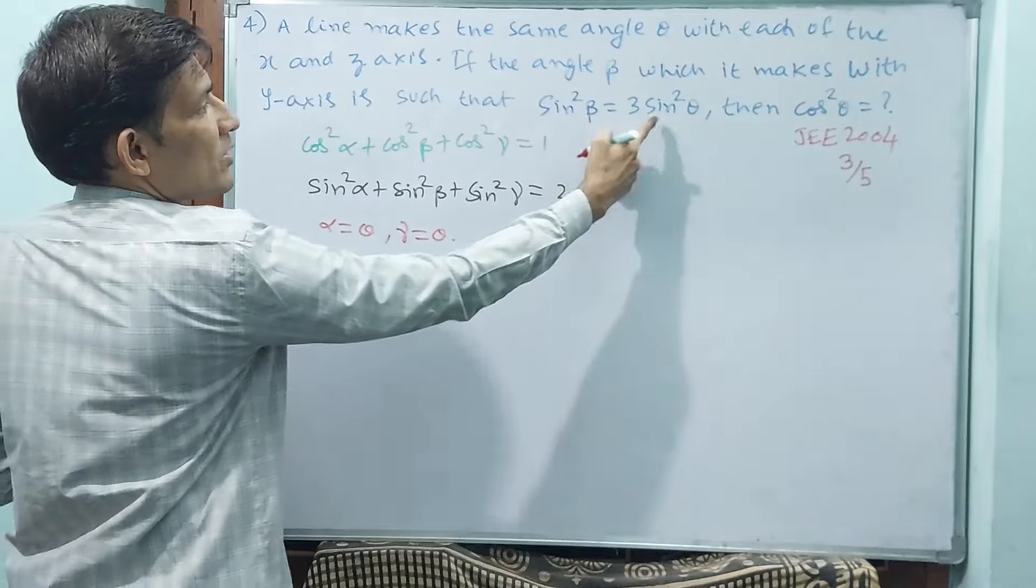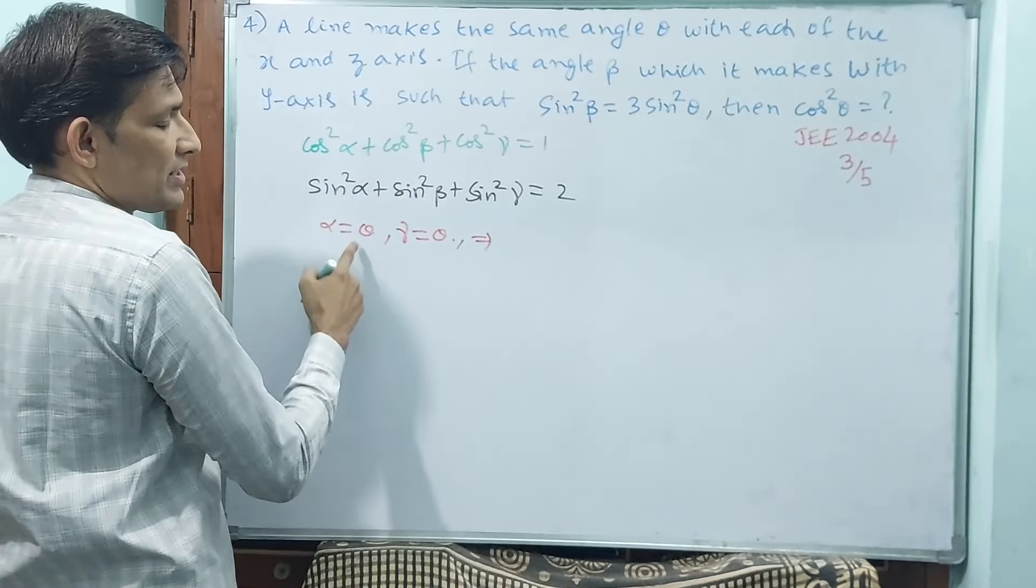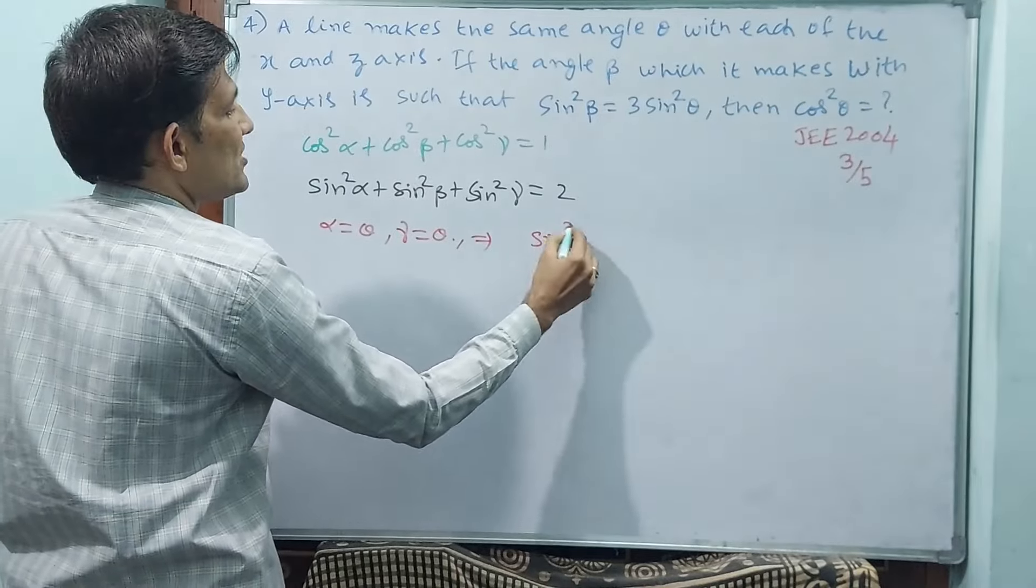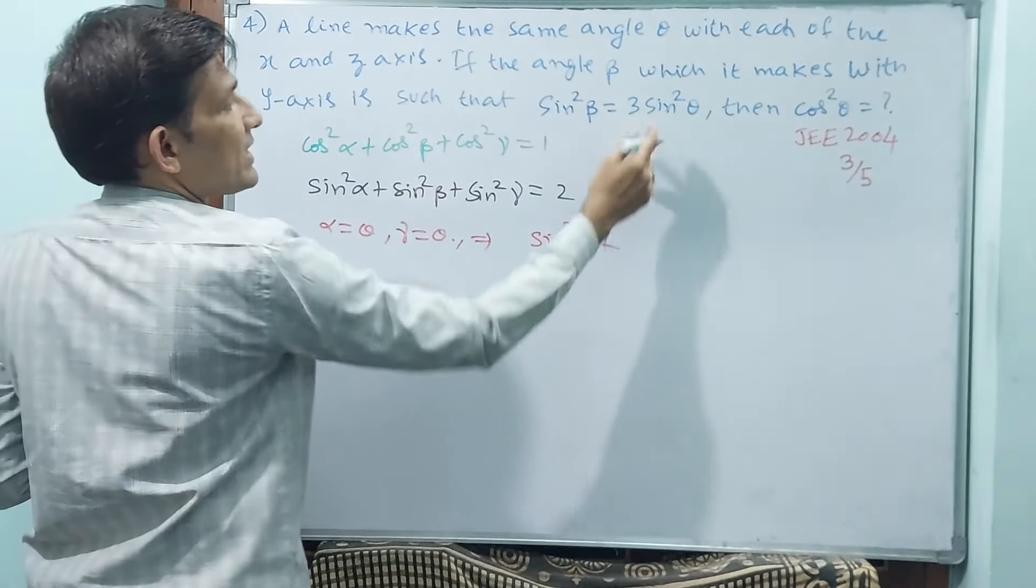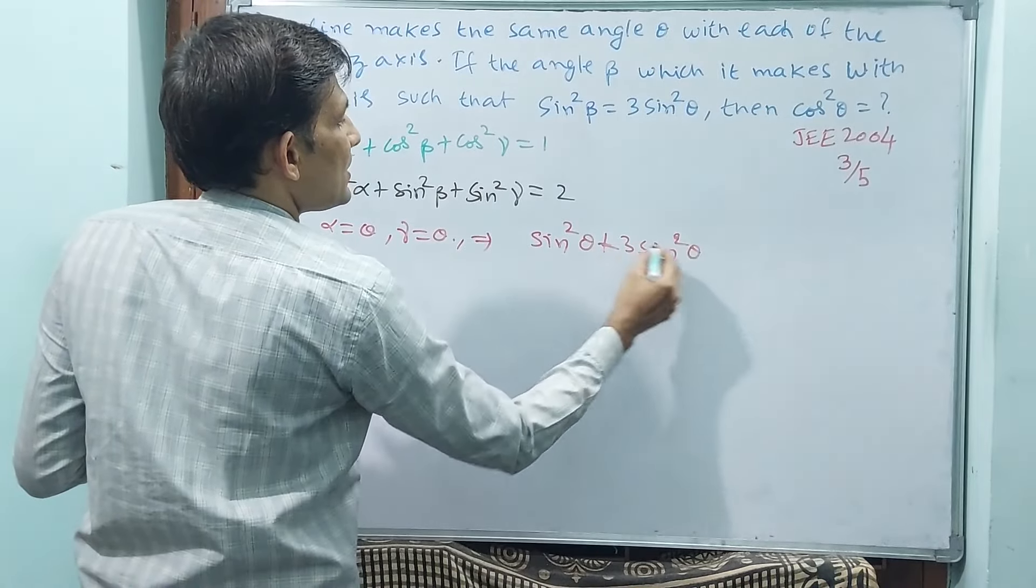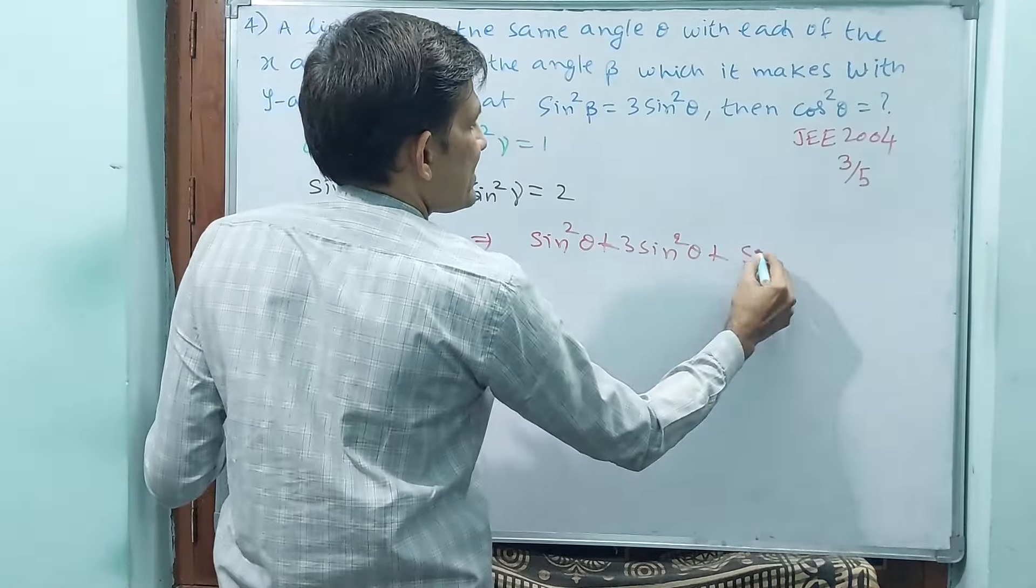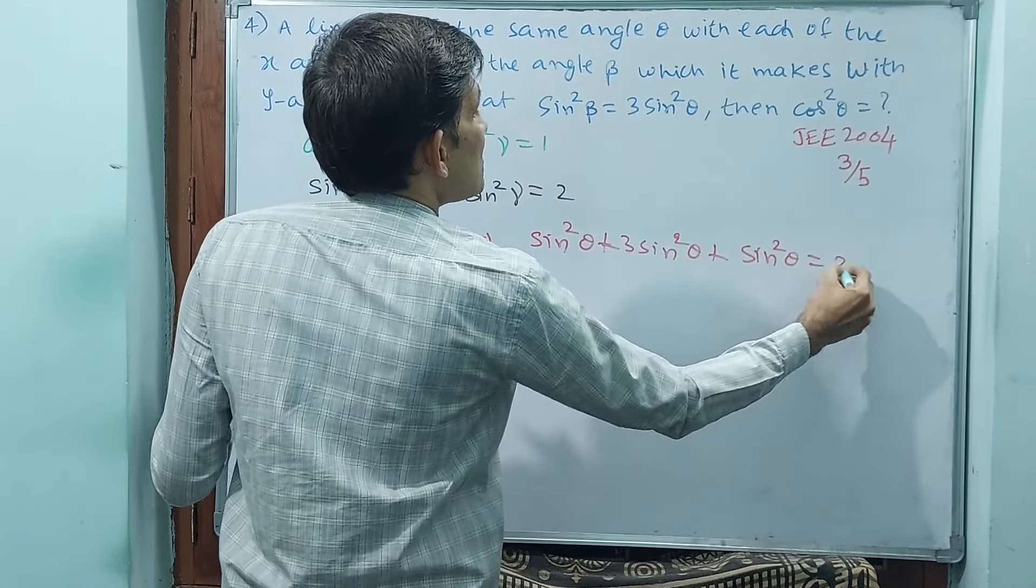Then sin square beta value is equal to 3 sin square theta. That means sin square alpha means sin square theta, right? Plus sin square beta means 3 sin square theta. Plus sin square gamma means again sin square theta, right? That is equal to 2.